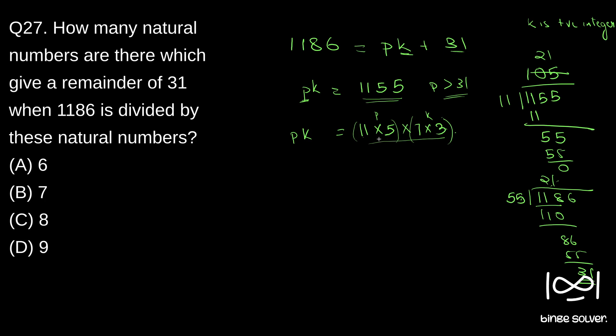P can be 11 into 5 and 7×3. So now, if you say, as I said, if you pick just one number, P could be 11, 5, 7, or 3. All these are not possible since P has to be greater than 31.